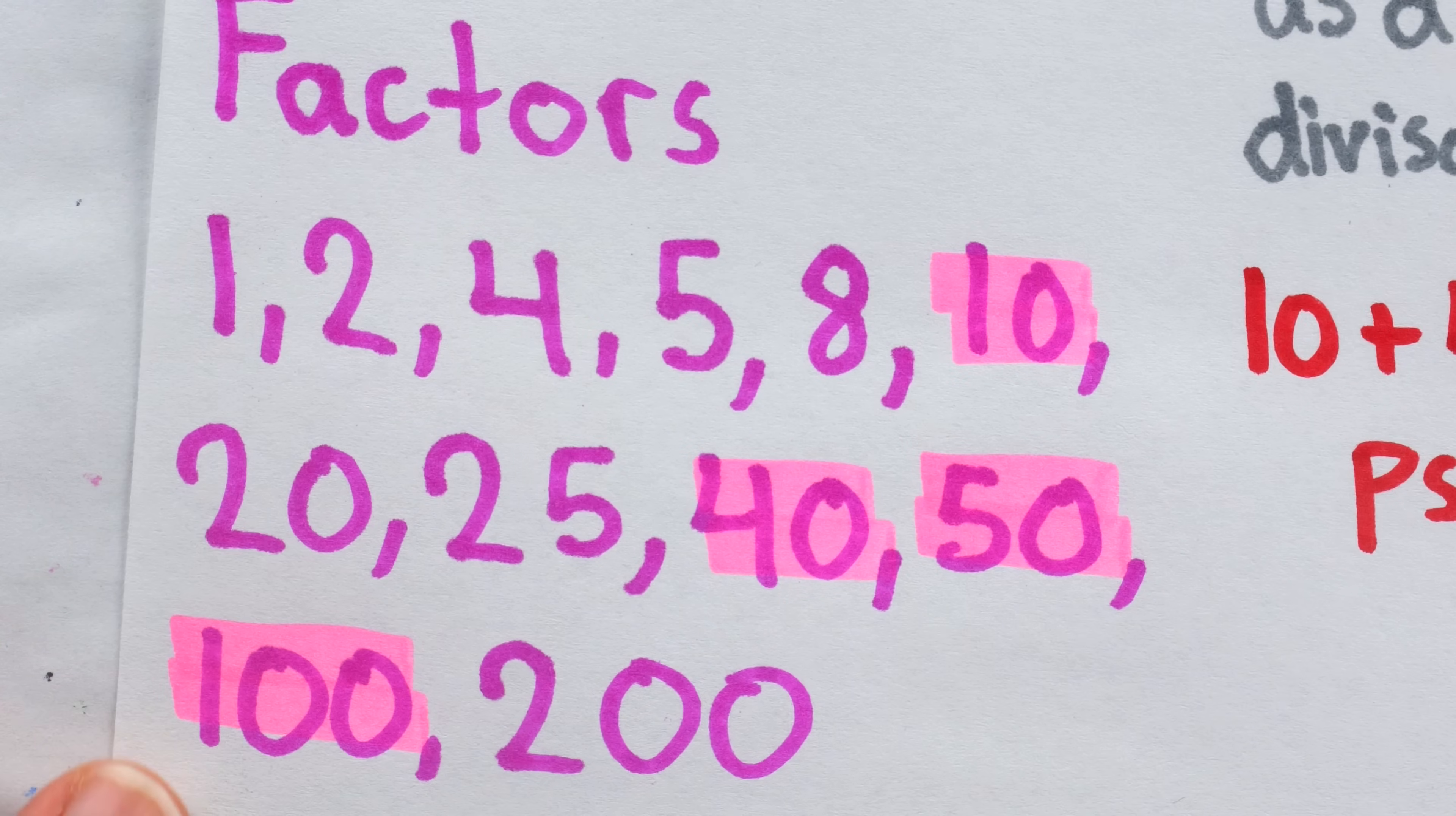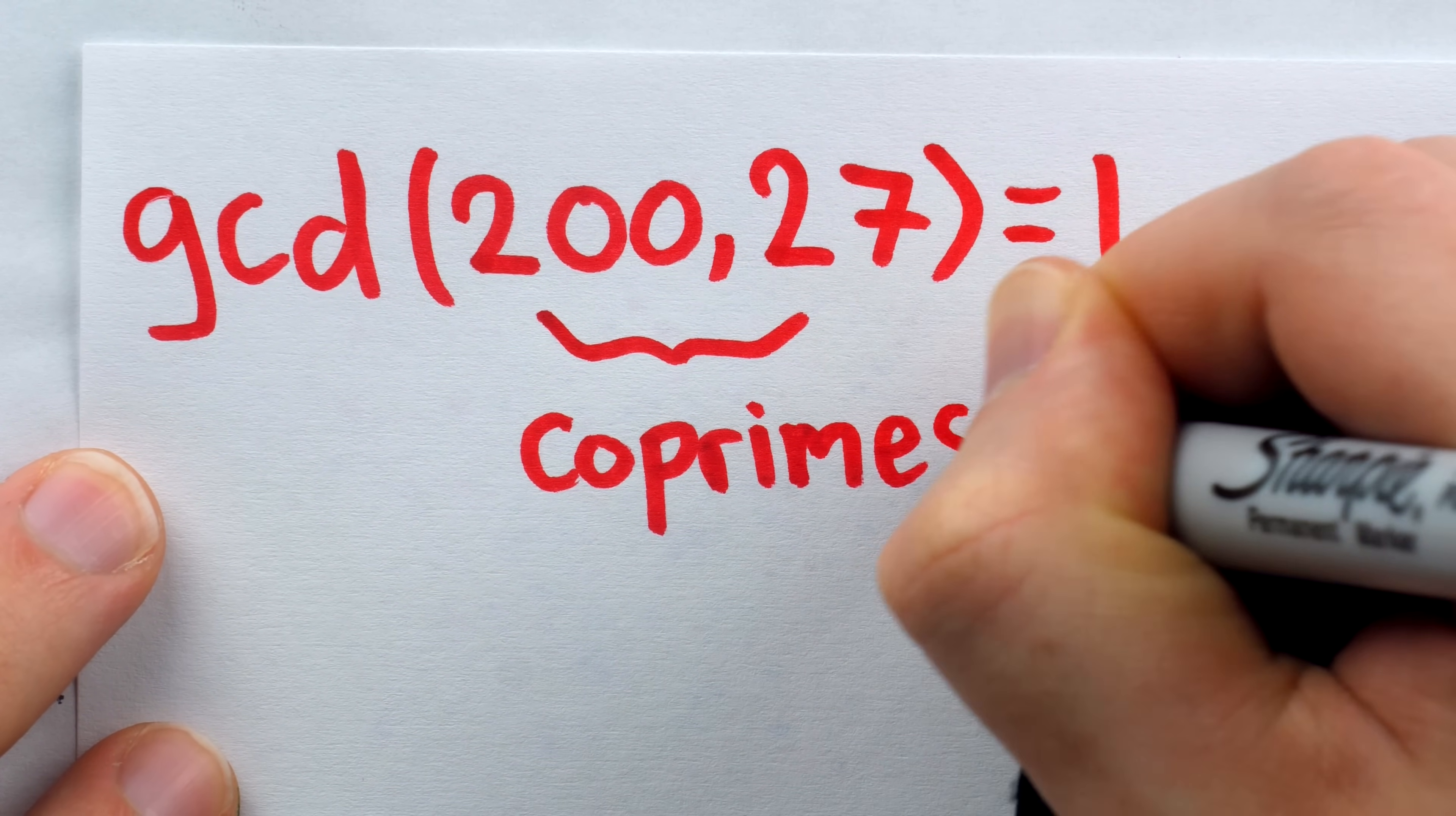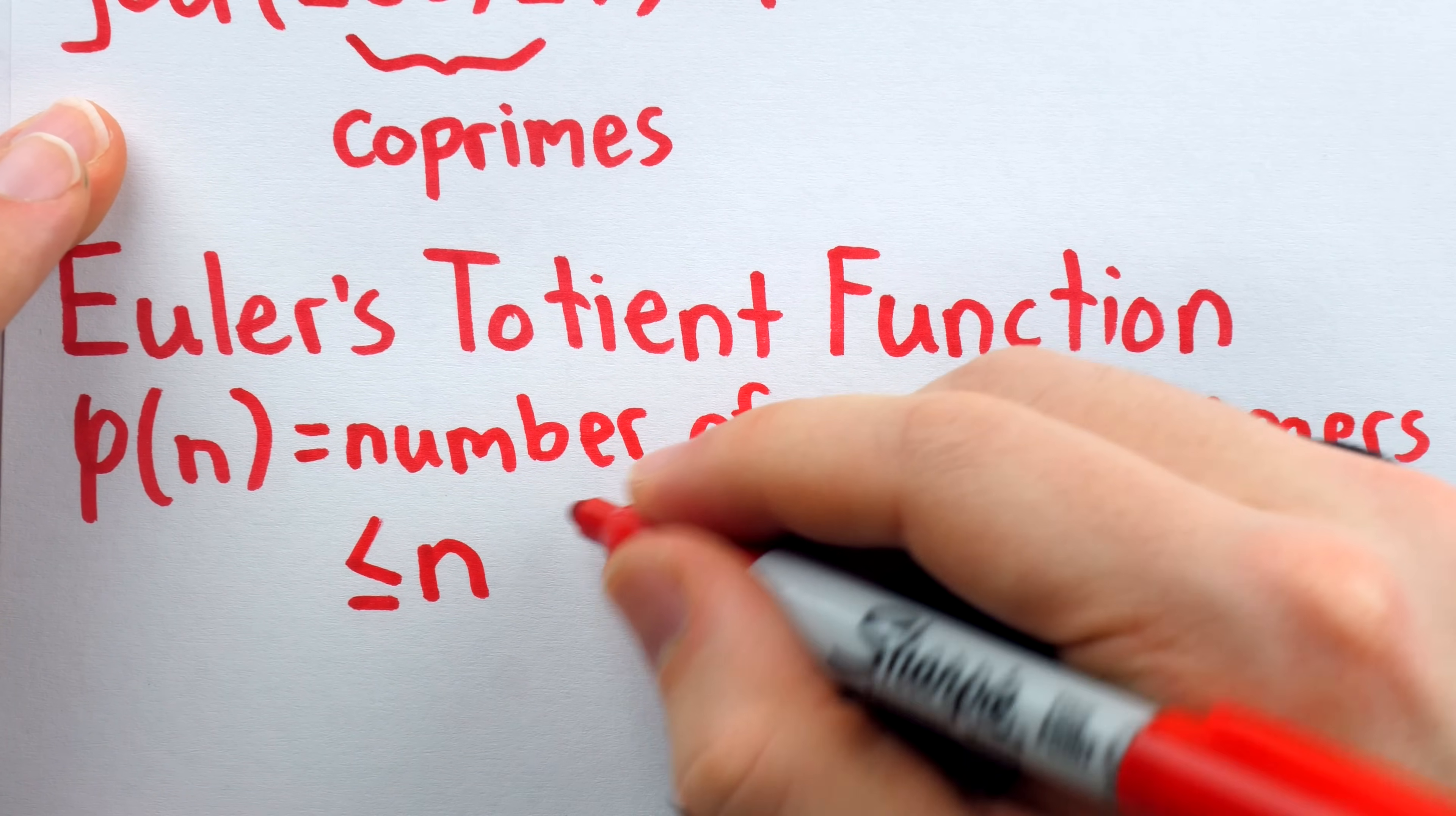With all of these divisors, of course, 200 is not a prime number, neither is 27. Although 200 and 27 aren't prime, they are what we would call co-prime, because their greatest common divisor is 1. This means they don't have any common factors other than 1. There's a special function which counts the number of positive integers less than the input number, which are co-prime. And that's this lovely function called Euler's totient function. It's written with the Greek letter phi. So phi of n is the number of positive integers less than or equal to n that are co-prime to n.